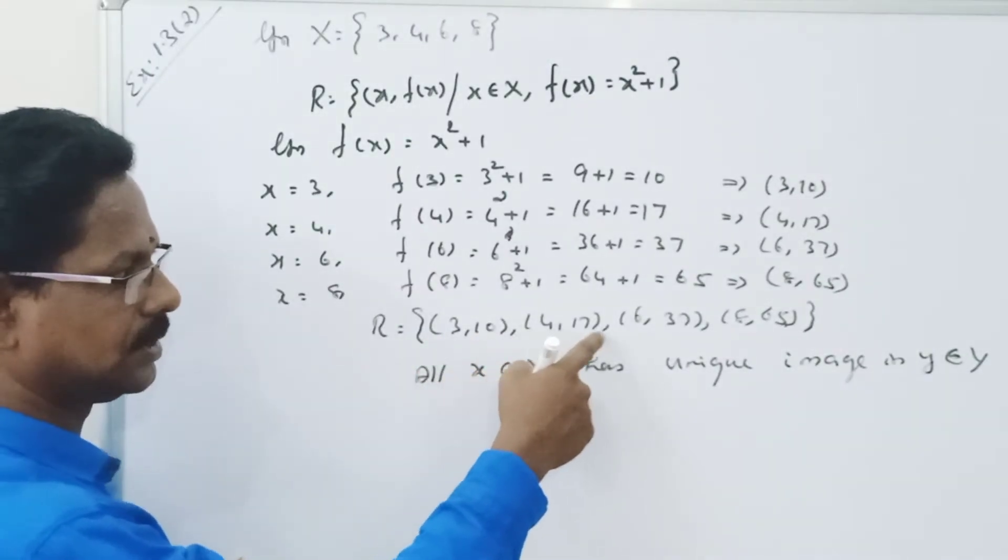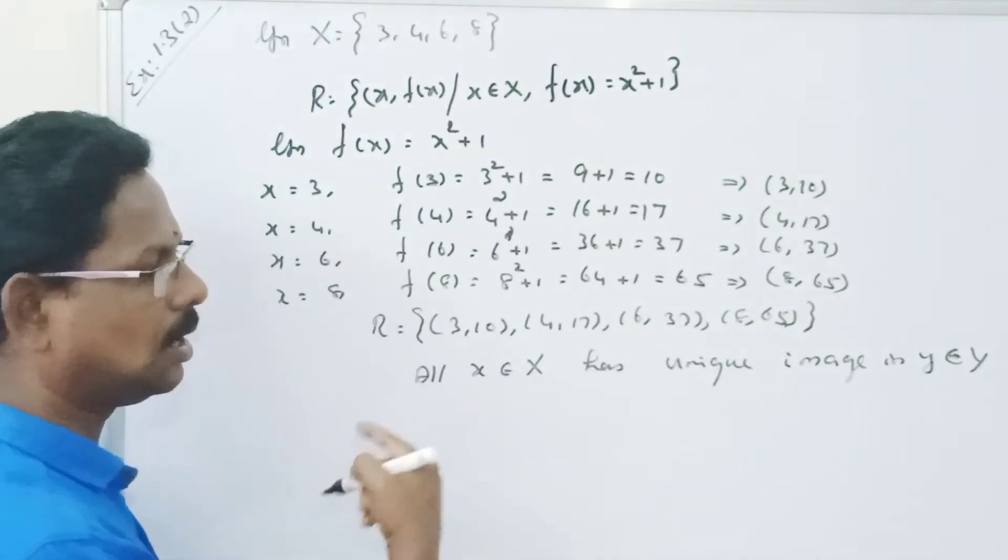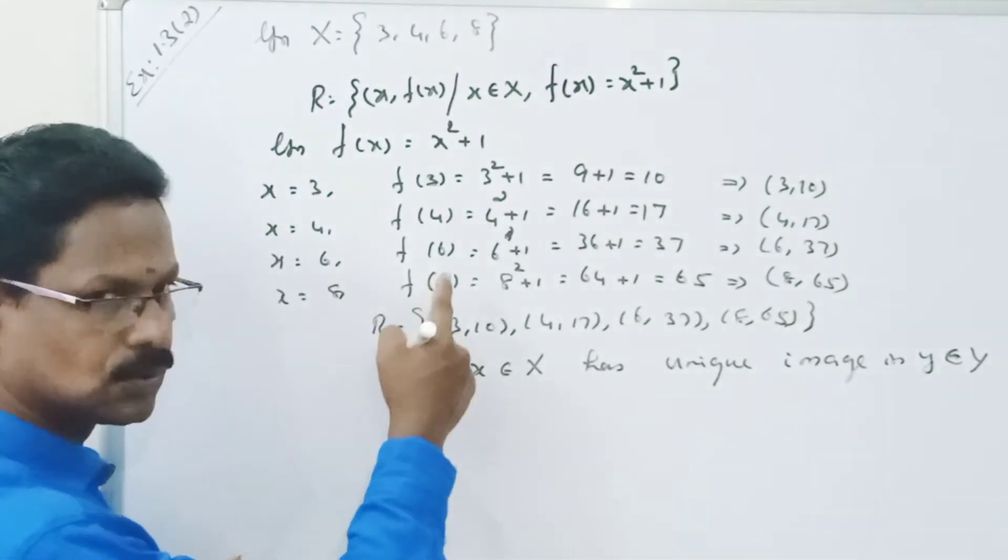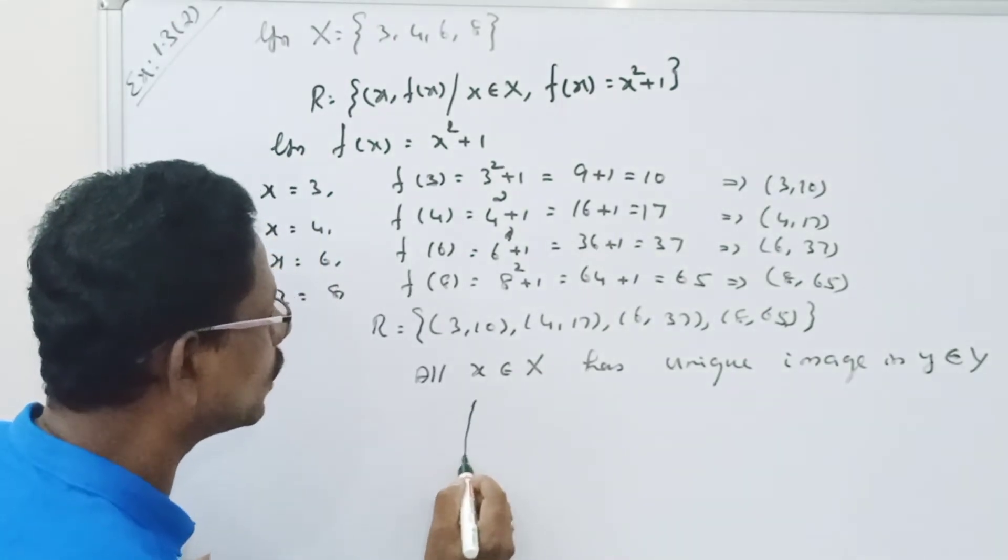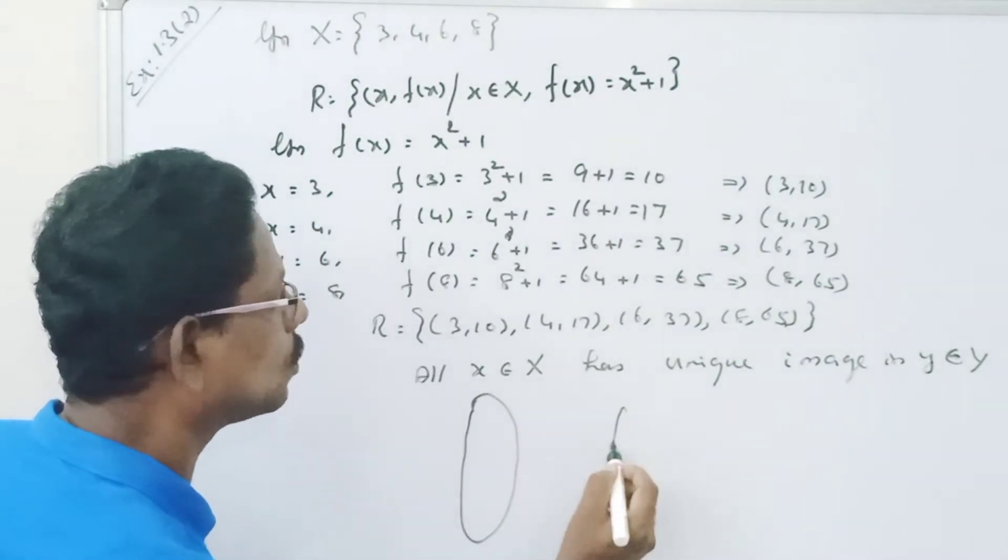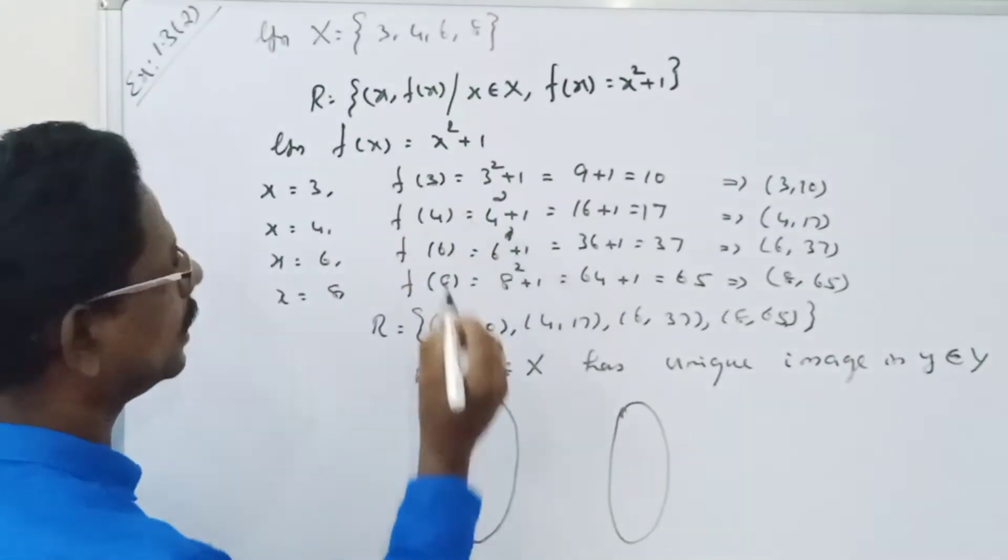Here, 3, 10, 4, 7, 8, 6, the range of x is equal to R. Therefore, it is a function. Now we draw the arrow diagram. What is the arrow diagram? What are the elements?